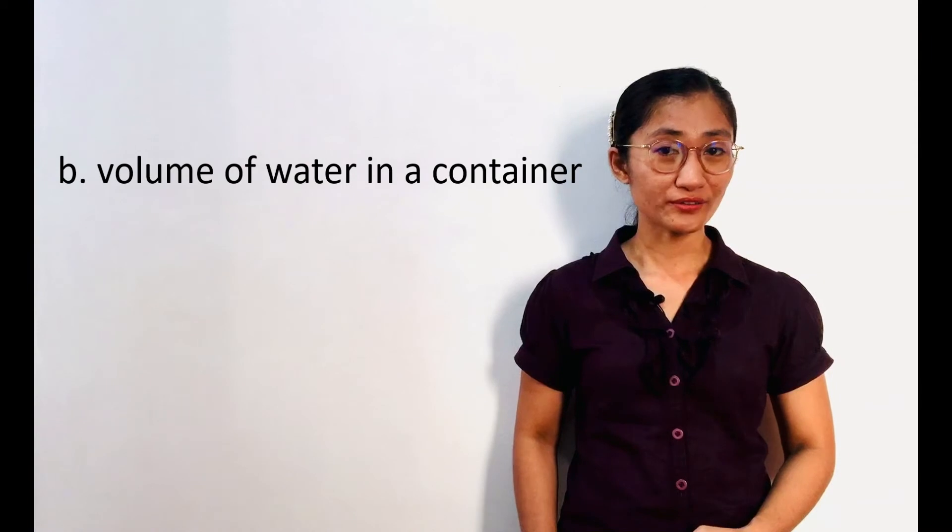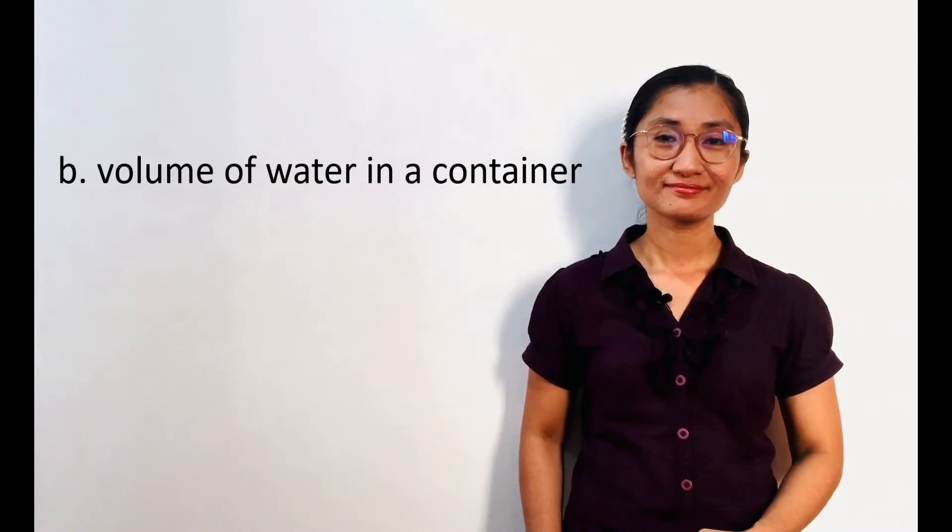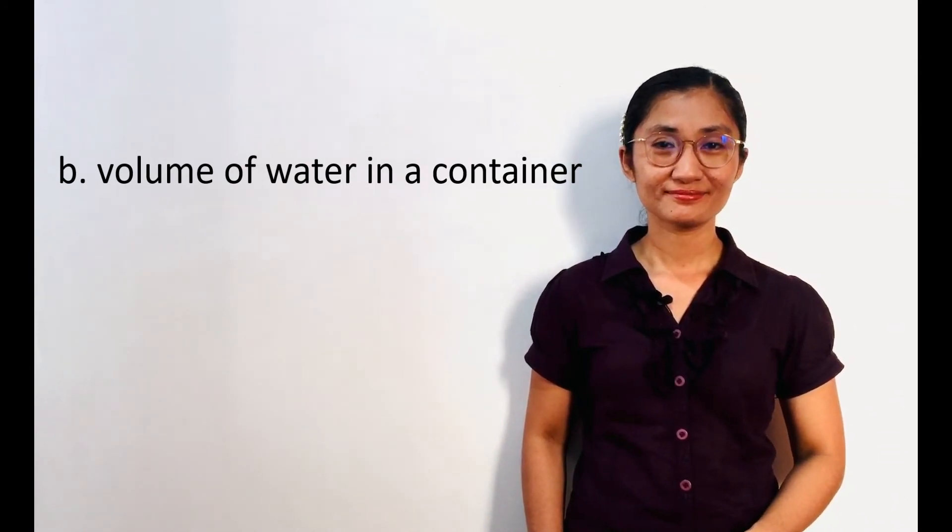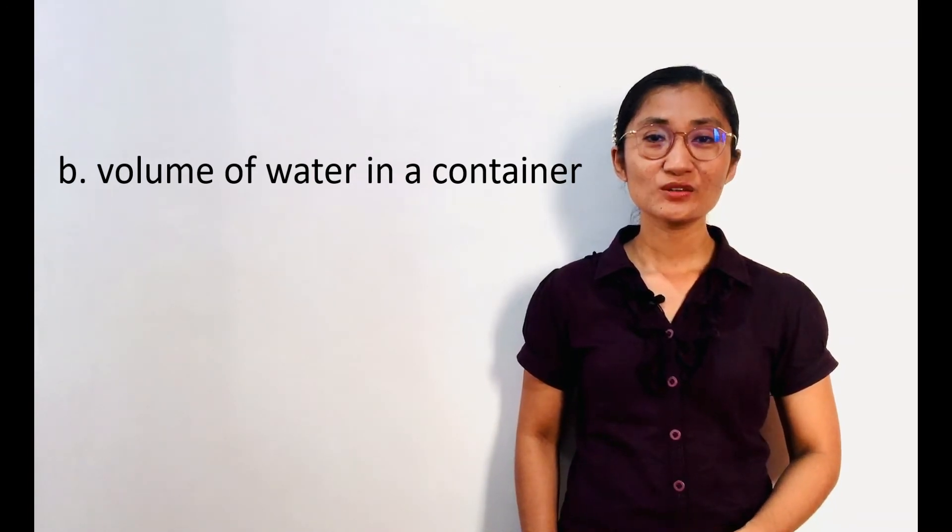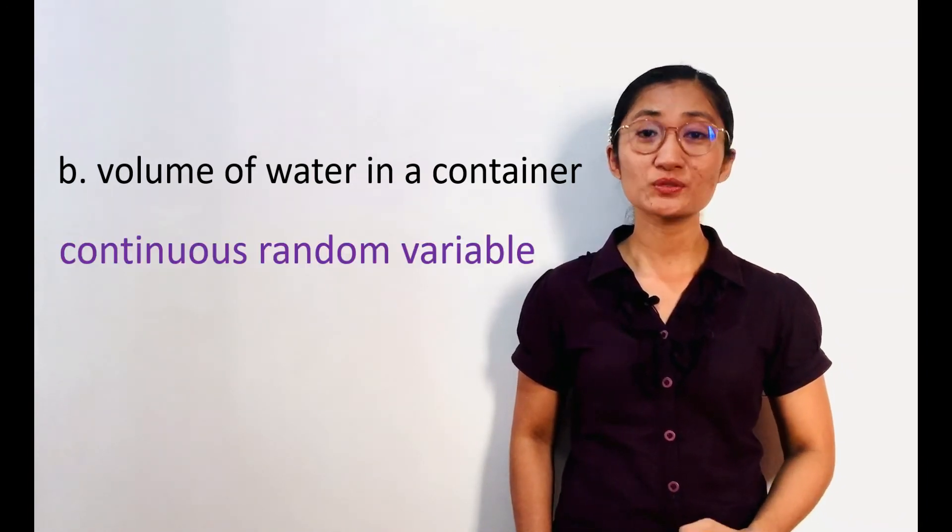Next, volume of water in a container. Is it discrete or continuous? The answer is, volume is another continuous random variable.